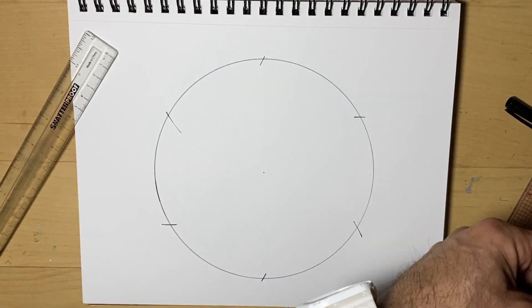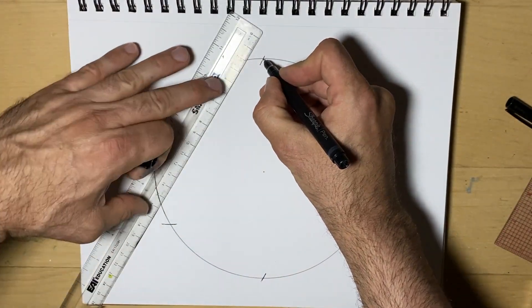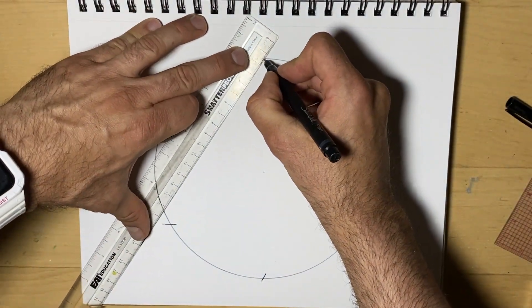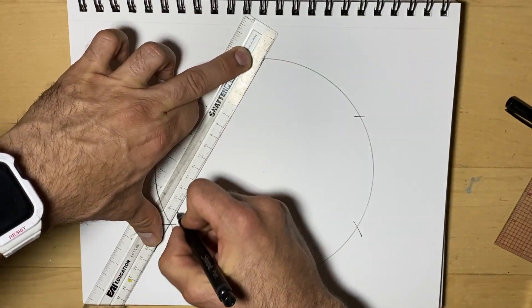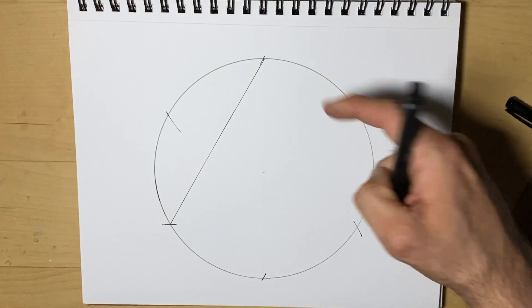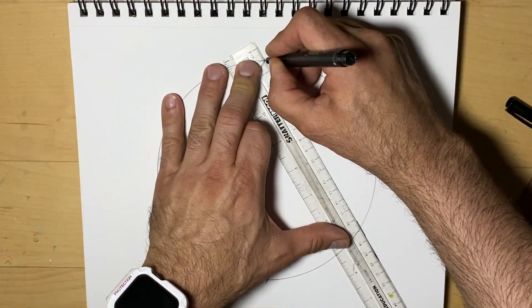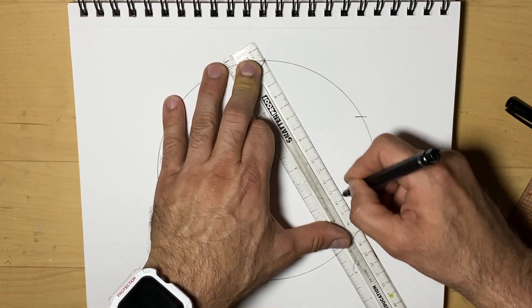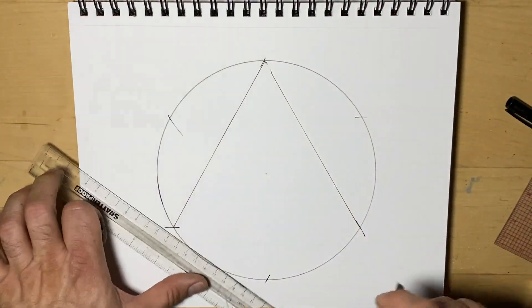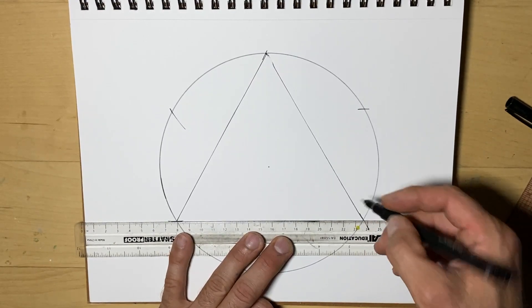So next, what I'm going to do is connect the dots from the top and then skip one mark and connect it here. We'll do the same thing here and connect it, skipping one marking. And we finish by connecting the two on the bottom.